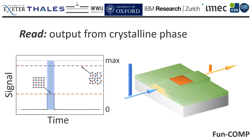The different energy absorbed between amorphized and recrystallized optical cell, visible by the two different outputs, is the mechanism allowing exploitation of the phase change cell for optical memory applications.